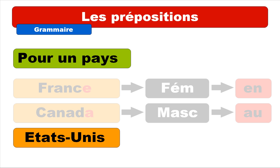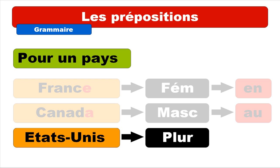And then the last category: countries like États-Unis. This category is plural, and it does mean that the preposition you will have to use is AUX — so even if it's ending with an X, you don't pronounce it. It's 'O'.